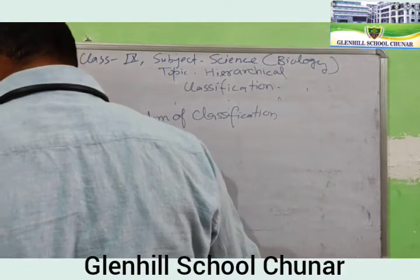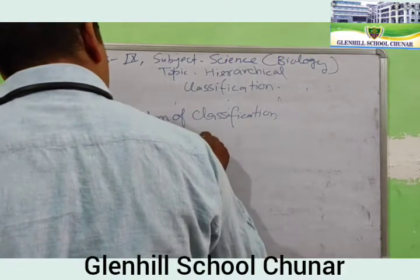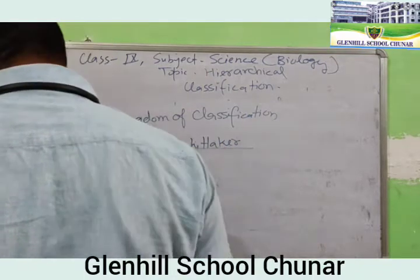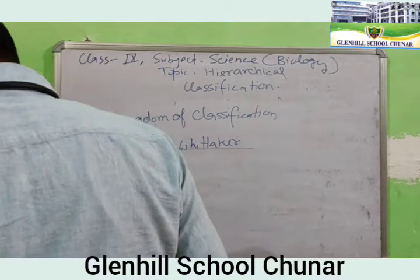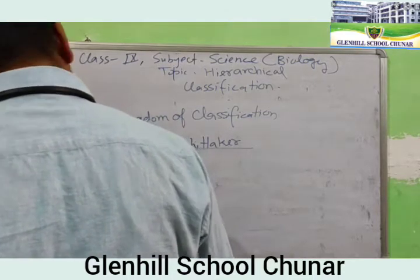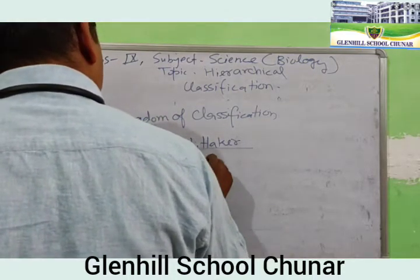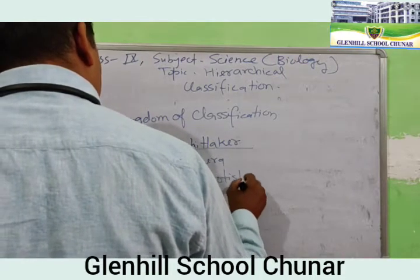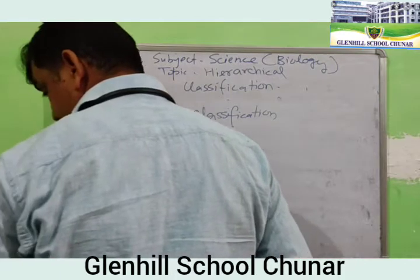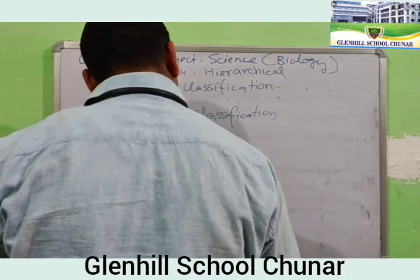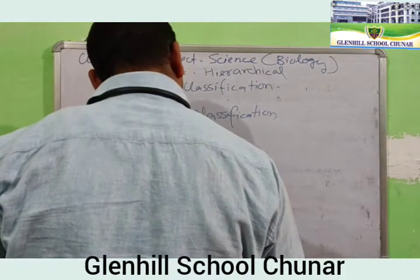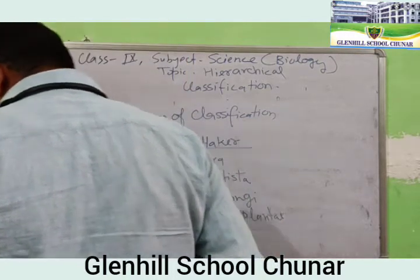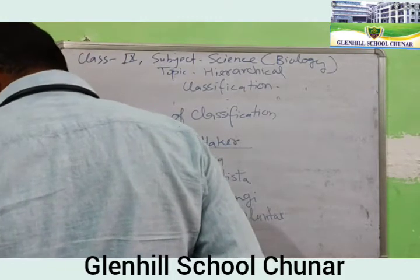Whittaker (W-H-I-T-A-K-E-R) gave the Five Kingdoms. The five kingdoms are: Monera, Protista, Fungi, Plantae, and Animalia.